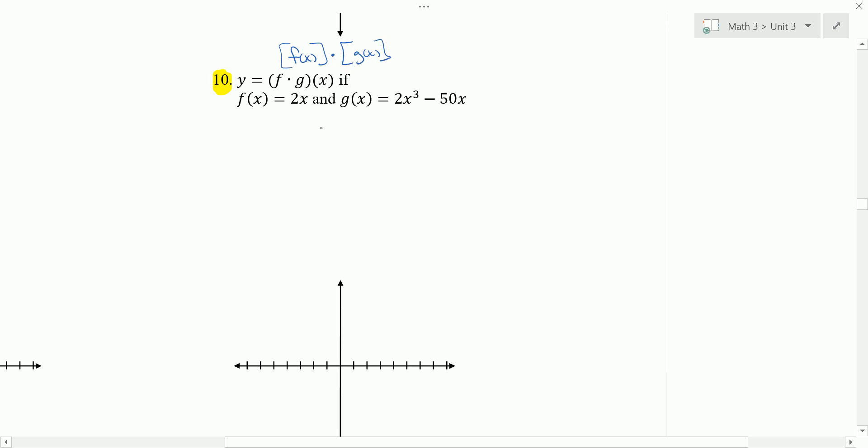So this is y equals 2x. That's your f of x times g of x. So times 2x cubed minus 50x. When you graph, you want to factor it as much as you can.